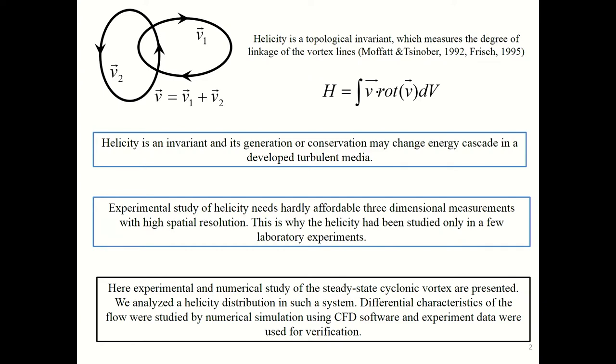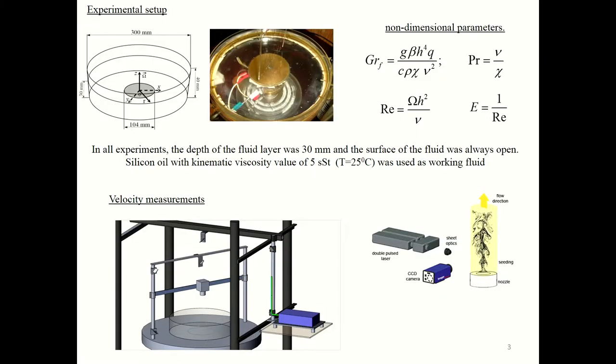In our work we consider the helicity distribution in convective flow from localized heat source in rotating fluid layer. Our flow is not fully turbulent, but the structure of large-scale flow in our system is very promising for helicity formation. Differential characteristics of the flow were studied by numerical simulation, and experimental data were used for verification.